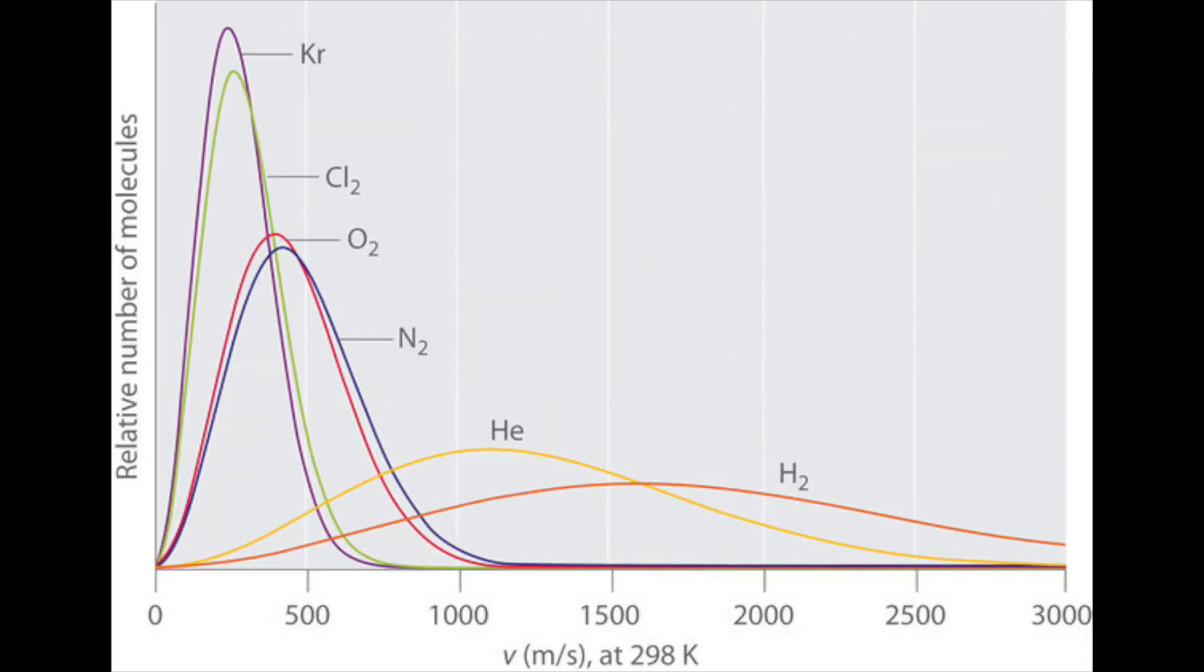Also, the molar mass has an effect on molecular speed. The heavier the gas molecules are the slower they move, such as krypton, whereas the lighter molecules like hydrogen have a higher average speed.